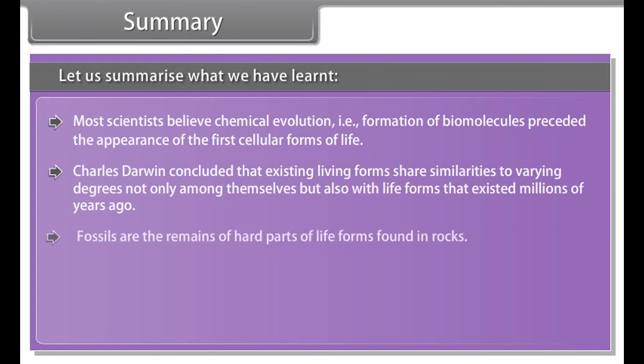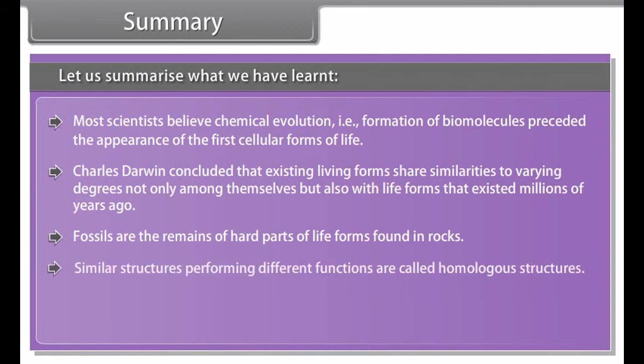The process of evolution of different species in a given geographical area starting from a point and literally radiating to other areas of geography is called adaptive radiation. Examples: Darwin finches of Galapagos Islands, Australian marsupials.